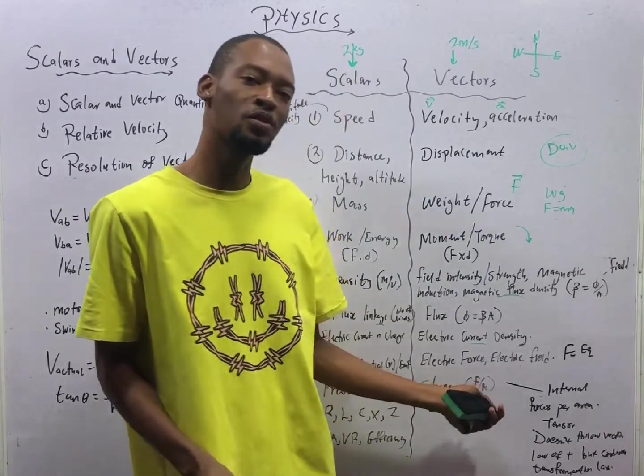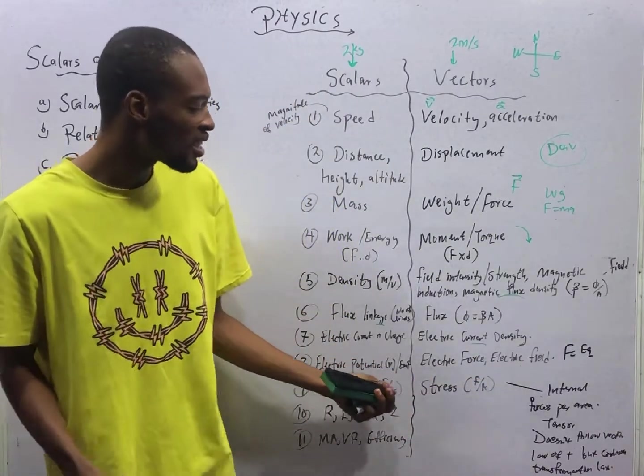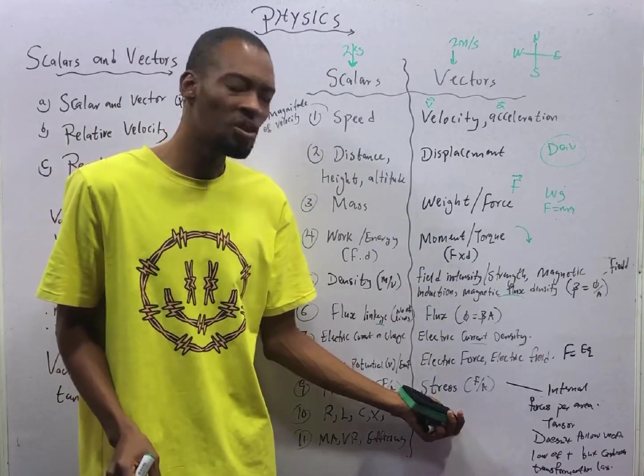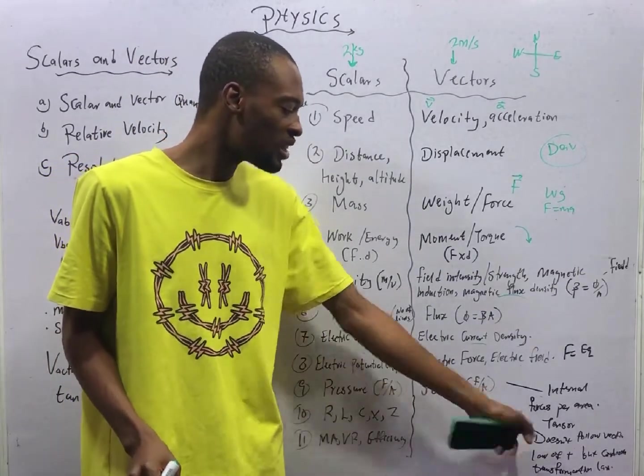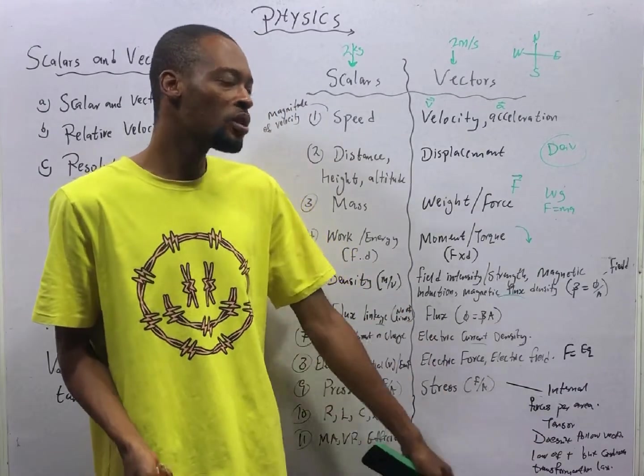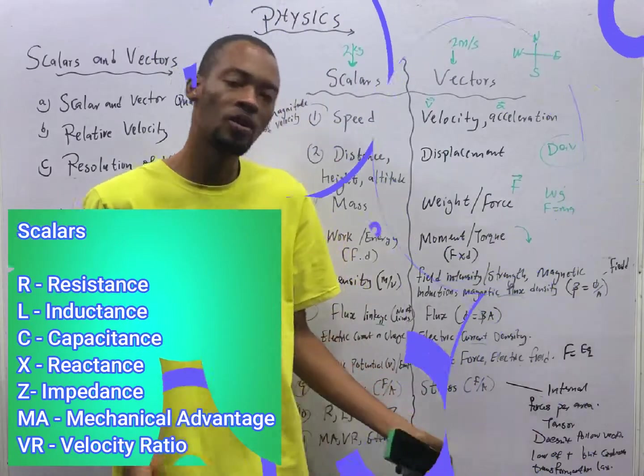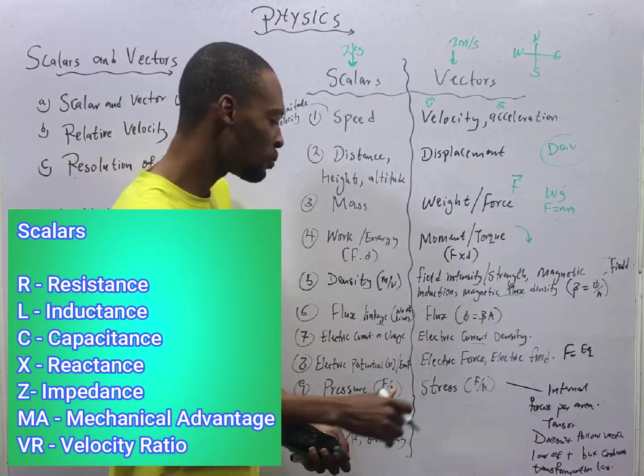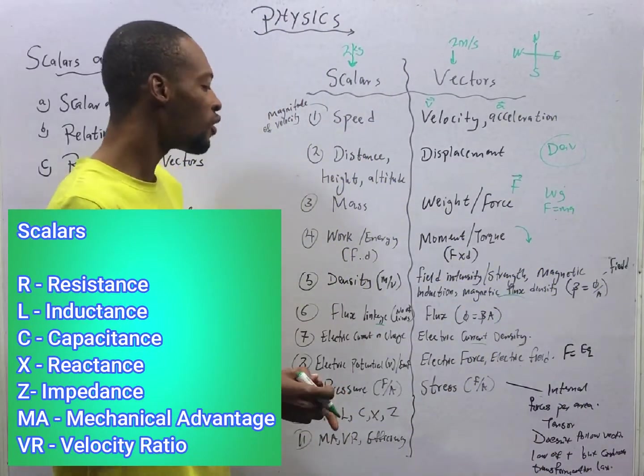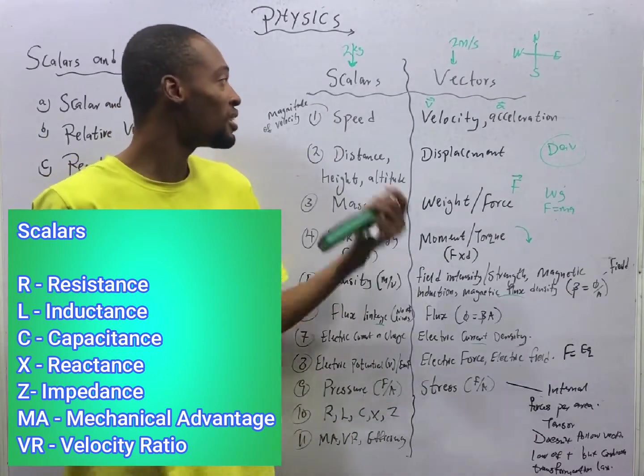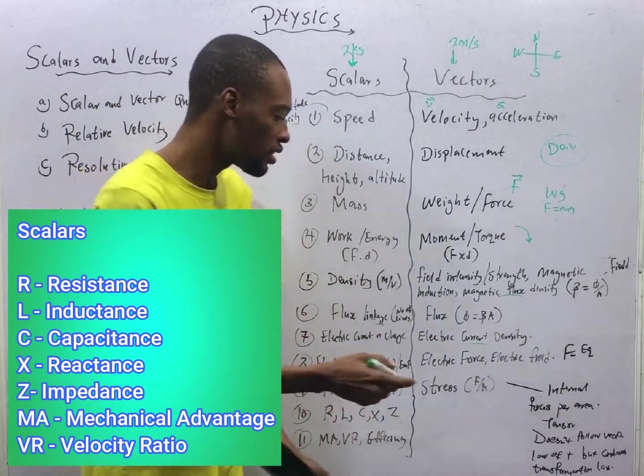And stress doesn't follow the vector law of addition. It follows the transformation law of addition. This is why, most times, stress is not considered a vector quantity. It is considered a tensor quantity. Because it follows the transformation law of addition, instead of the vector law of addition. So you can take this to be a tensor quantity, or you even remove it, or confuse it to the scalar quantity. So this is debatable.